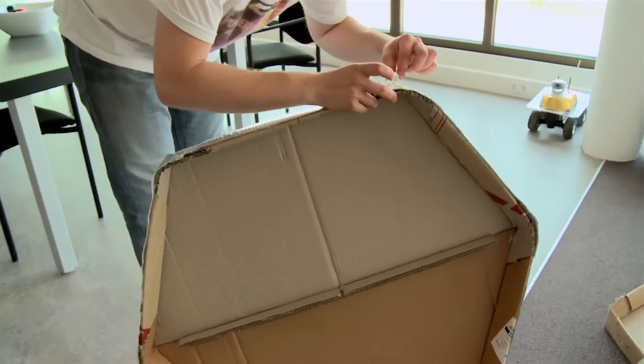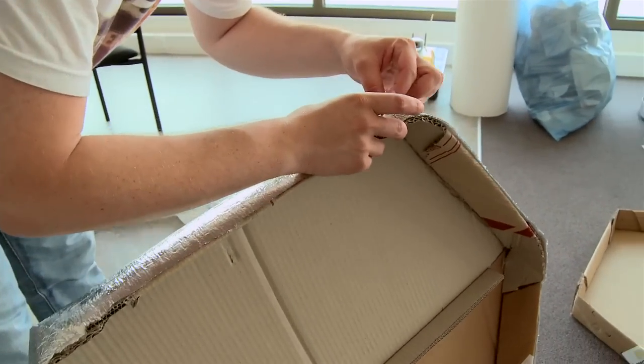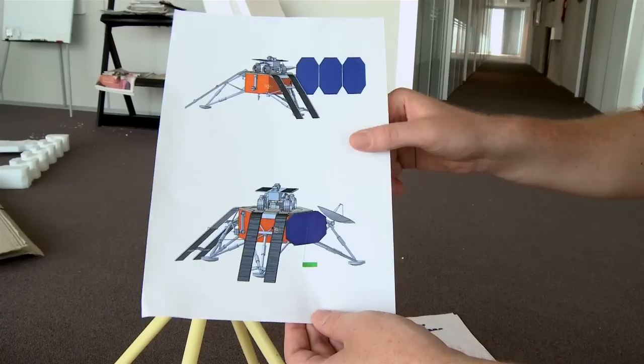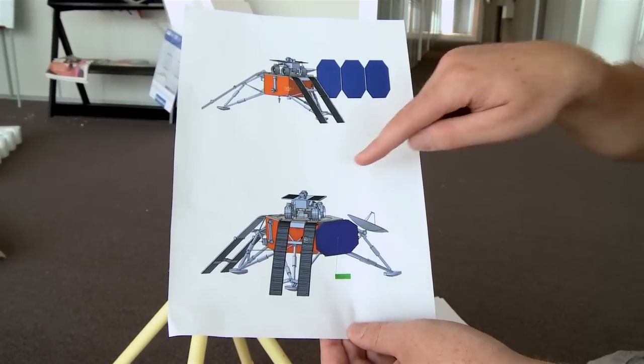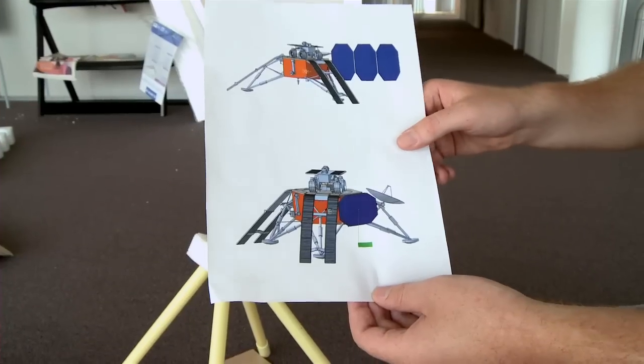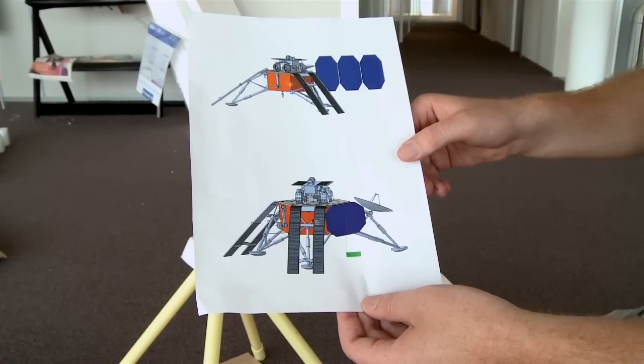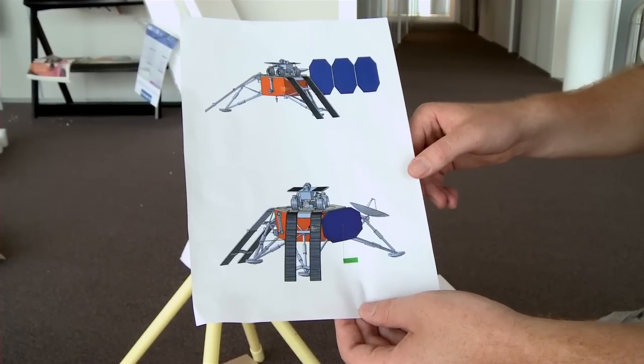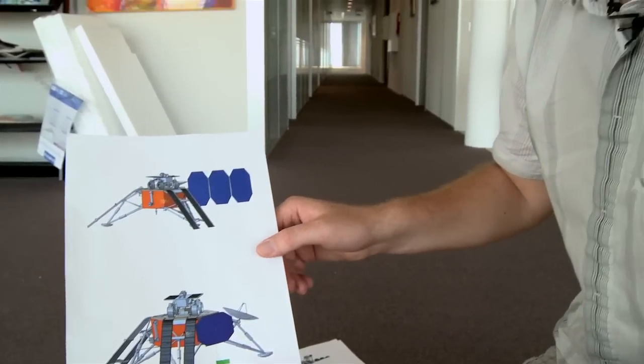We're building the mock-up of our lander. This is actually a picture of our computer model from different views. You see the rover is there perched on top, and that's the main function of the lander. The lander is required to take the rover to the moon.